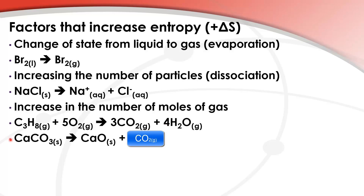Our next example is the decomposition of calcium carbonate. Calcium carbonate decomposes when heated into calcium oxide. So we have one mole of solid making one mole of solid and one mole of gas. That's an increase in entropy.